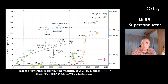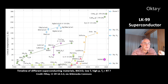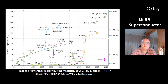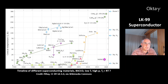This is a timeline of all the different superconducting materials, with the year of discovery on the x-axis and critical temperature on the y-axis. The first superconducting material was mercury, found in the early 20th century.